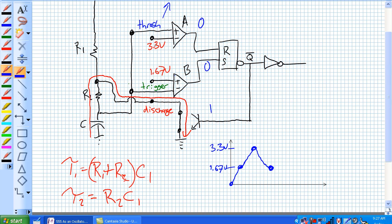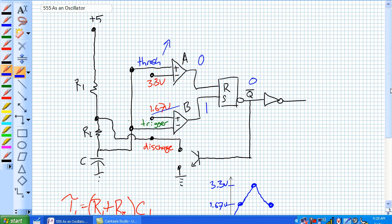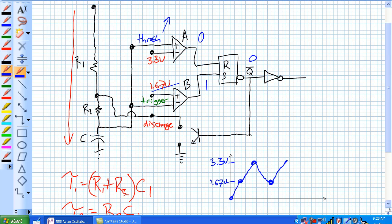Well, at 1.67 volts, the capacitor has fallen to 1.67 volts. The trigger is less than the 1.67 right here. So, the output B goes to a 1, and it sets the latch, making not Q a 0 and opening up our discharge transistor, and guess what happens?